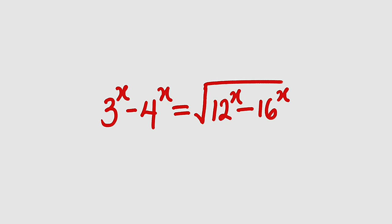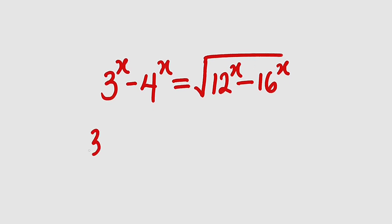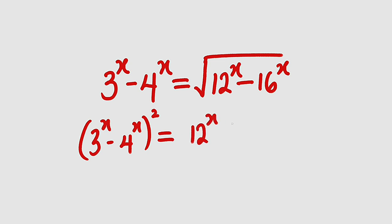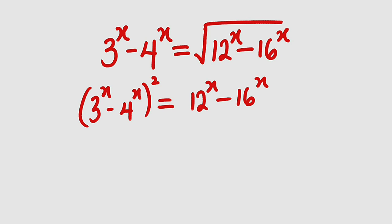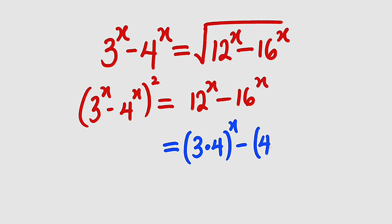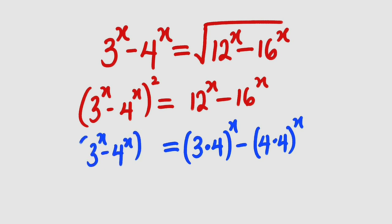First of all, I would like to square both sides. So on the left-hand side, we have 3 to the power of x minus 4 to the power of x, whole squared. And this is equal to, once you square the right-hand side, you will be left with 12 to the power of x minus 16 to the power of x. Now, 12 can be written as 3 multiplied by 4, raised to the power of x, minus 16 written as 4 multiplied by 4, raised to the power of x. The left-hand side remains 3 to the power of x minus 4 to the power of x, whole squared.